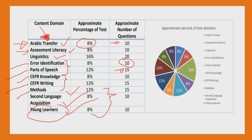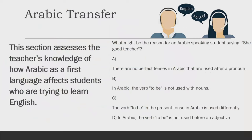I hope this is going to help you in your exam preparation. You can easily know how many questions will be asked according to each particular content domain. Now let's see what the Arabic transfer section of the exam looks like. This section assesses the teacher's knowledge of how Arabic as a first language affects students who are trying to learn English — basically it is about language transfer.